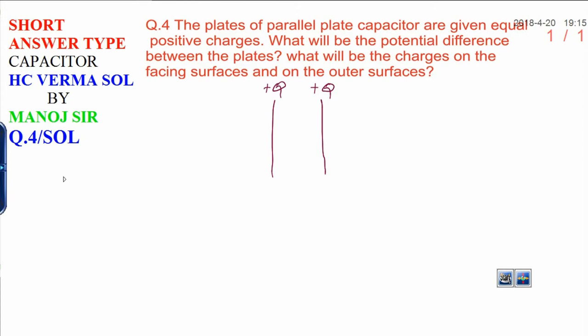What will be the potential difference between the plates? This is the first part of the question, part A. The potential difference is V₁ minus V₂, where V₁ is the first plate and V₂ is the second plate.